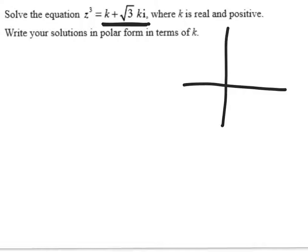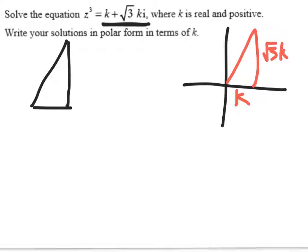And that's the case here. So we've got a little similar triangle that is very similar to a special triangle. We've got k out here, √3k up here. This is √3ki here, and this is k, the real part here. So that means that r, for this complex number, is going to be, via Pythagoras, 2k.